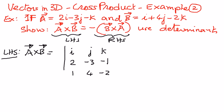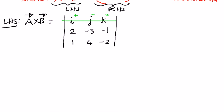If we take the determinant of this, we should be able to get the value of the cross product between vector a and vector b. To do that, I'm going to follow this sign convention. We're going to travel along the first row, and the sign convention we are going to use when we use determinants is: the first row, first column element will be positive, then negative, then positive. It will alternate between positive and negative. So we will use that sign convention and expand this.